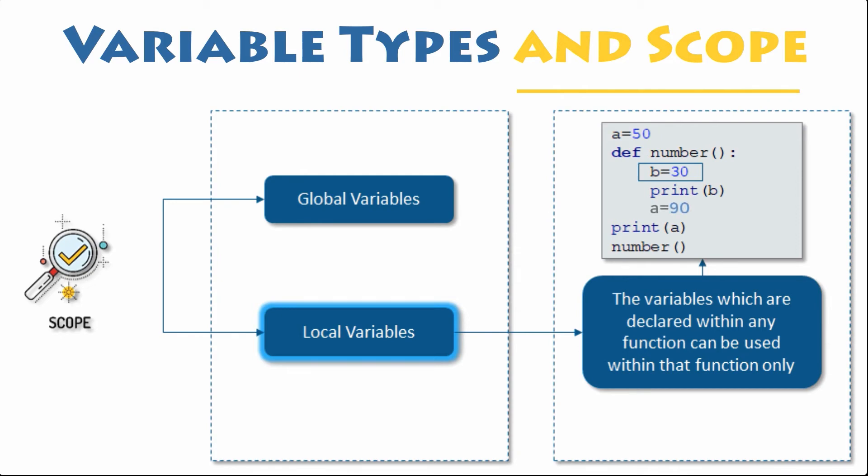Normally, when you create a variable inside a function, that variable is local and can only be used inside that function. If you create a variable with the same name inside a function, the global variable with the same name will remain as it was and will keep its original value.